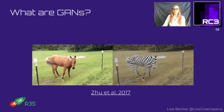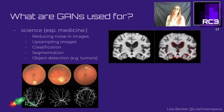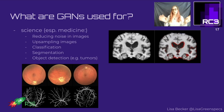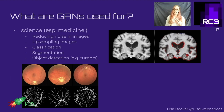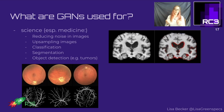GANs are used in medicine, for example to reduce noise in images, up-sample low-resolution images, perform classification, segmentation, and object detection. In the lower-left image you see pictures of an eyeball where a GAN can extract an image of the blood vessels, which could be used to diagnose something. On the right you see an MRI scan of the brain where the GAN can detect abnormalities in tissue that could indicate disease - saving time and resources.